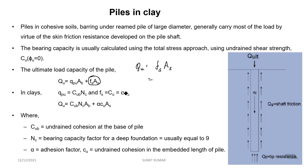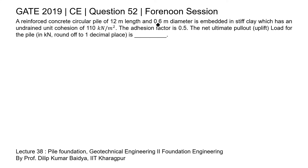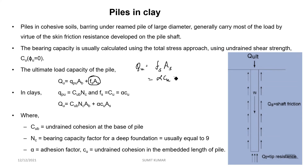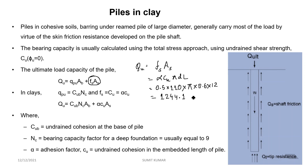The formula for FS is alpha × CU, and S is the surface area of the pile. Since the pile is circular with 0.6 meter diameter and 12 meter length, the surface area of the cylinder is π × D × L. So the uplift load equals alpha × CU × π × D × L = 0.5 × 110 × π × 0.6 × 12, which gives a pullout load of 1244.1 kilo Newton.